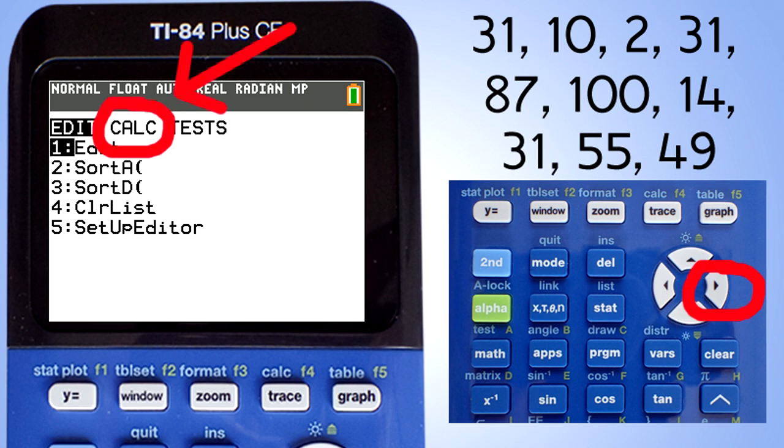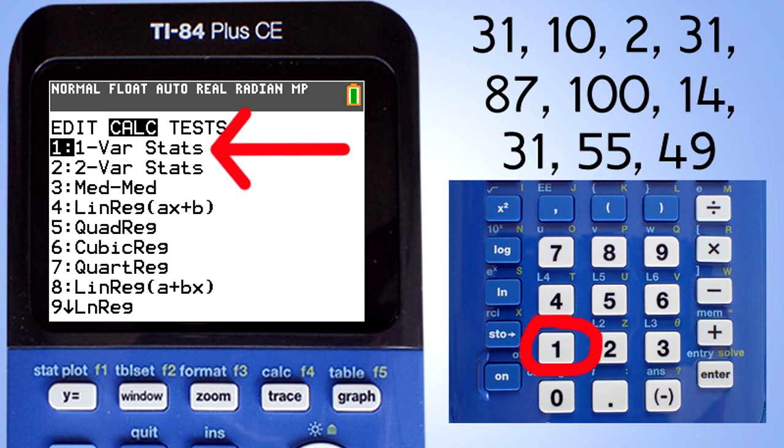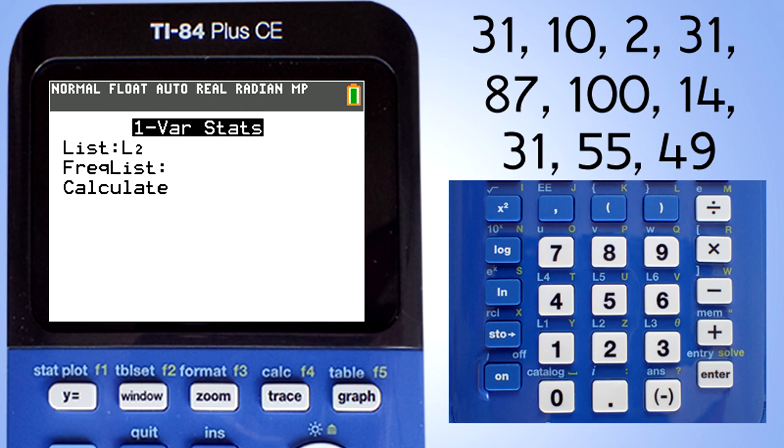Use the right arrow key and go to calc. Now these are our choices. We want to choose the first one, one variable stats. Press the 1 key or the enter button. This window pops up.